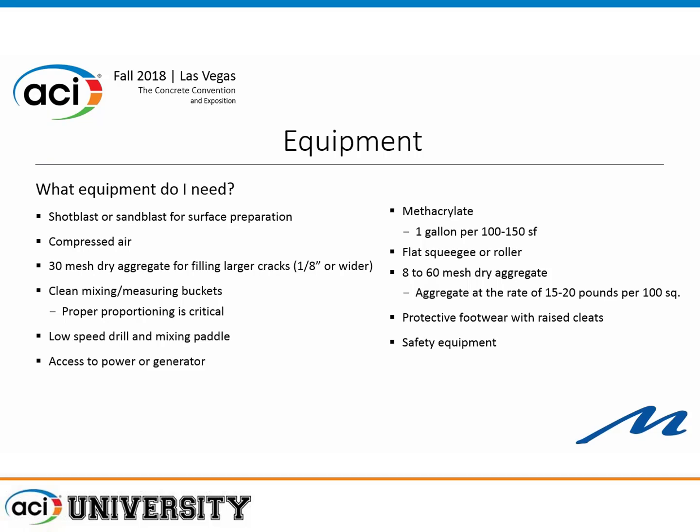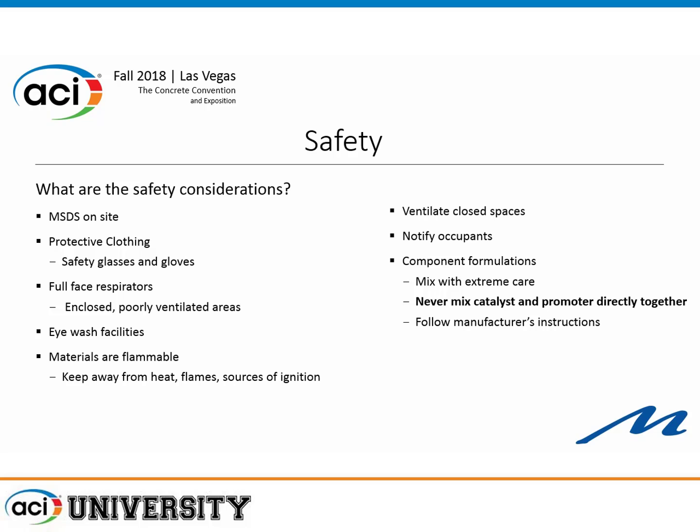For equipment, you need shot blast or sandblast equipment and compressed air for cleaning out the cracks. You need aggregate for filling the cracks and proper proportioning equipment — buckets, mixing paddle, and power. Typical application is a gallon of methacrylate covering about 100 to 150 square feet, and you roll it out as shown in the first slide. Raised cleats on the footwear are a good idea, just as with any other floor coating, along with proper safety equipment.